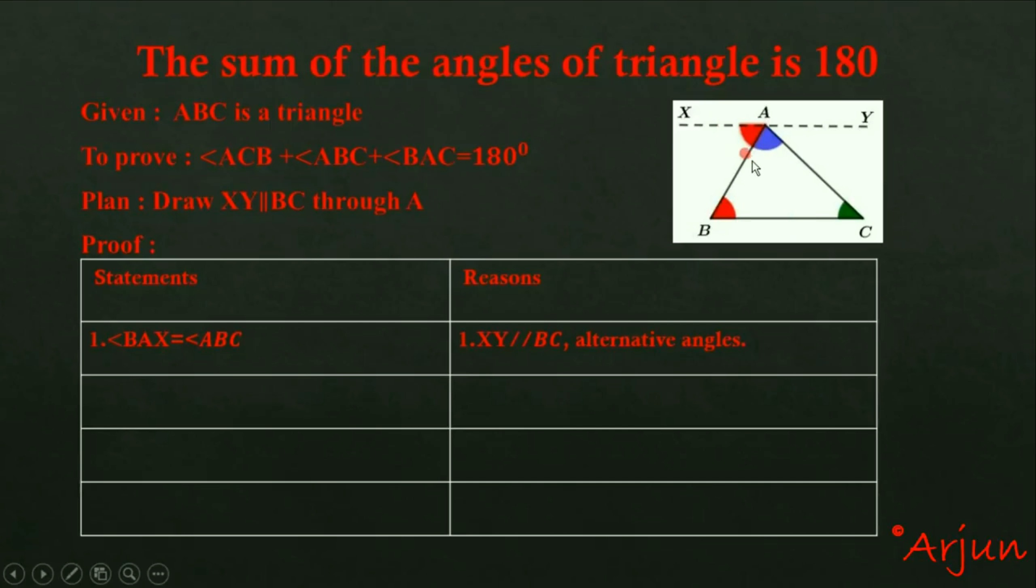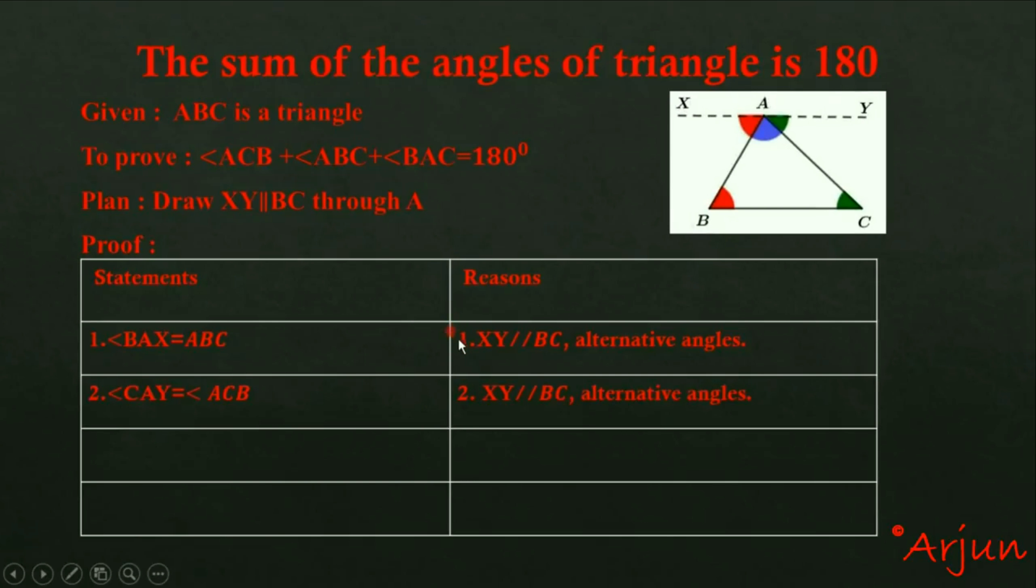In our construction, one side is parallel to another side. ABC is a transversal line cutting two parallel lines, so the interior angles on opposite sides are alternate angles, which are equal. The reason is: XY is parallel to BC, alternate angles.